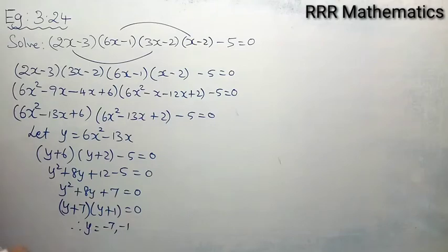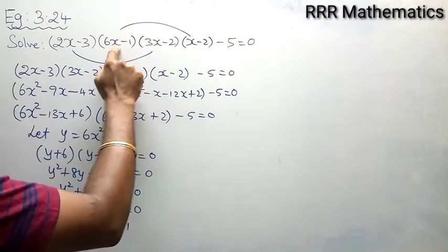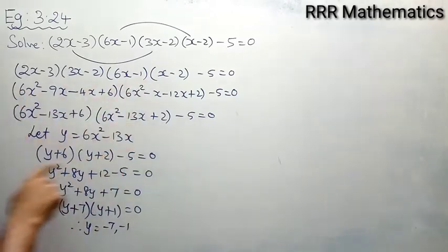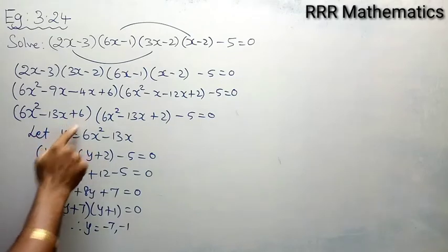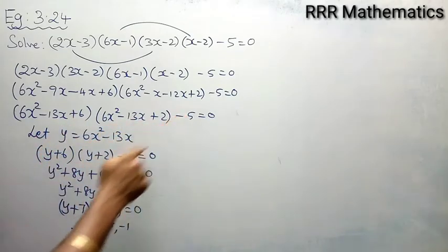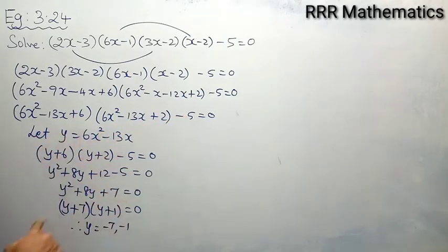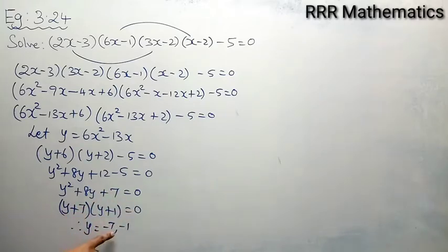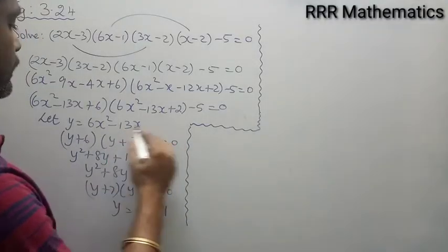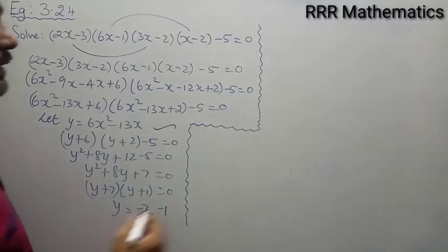To recap: I paired (2x-3)(3x-2) and (6x-1)(x-2), both giving 6x² - 13x. Setting y = 6x² - 13x, I get (y + 6)(y + 2) - 5 = 0, which simplifies to y² + 8y + 7 = 0. Factorizing gives (y + 7)(y + 1) = 0, so y = -7 and y = -1.